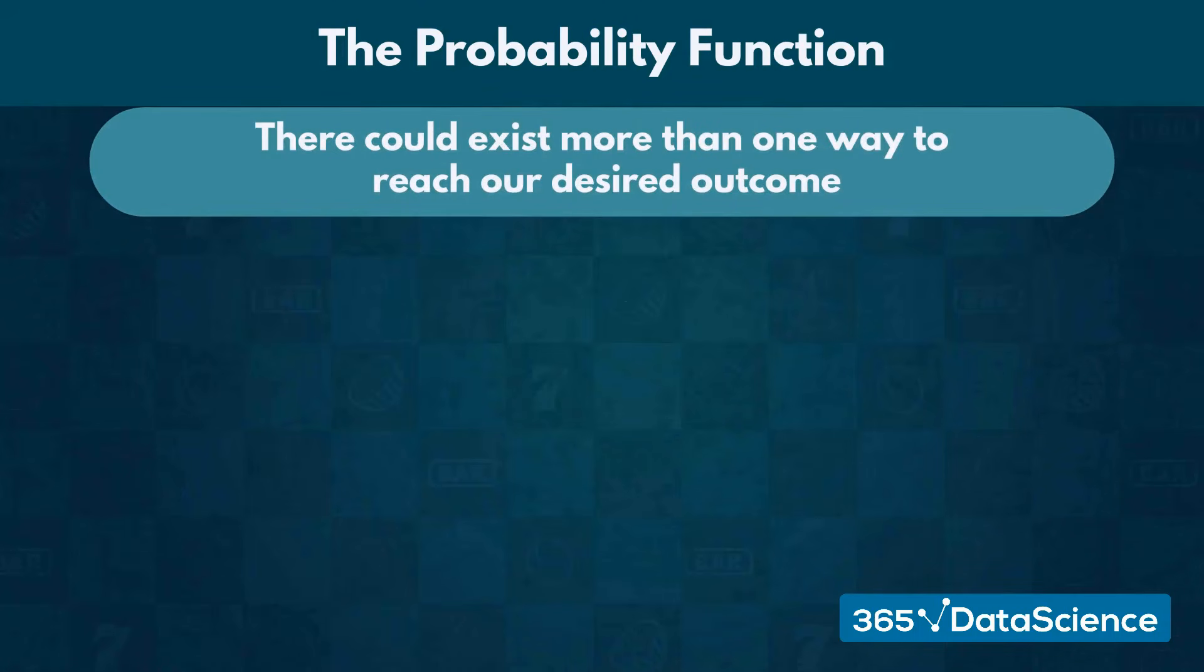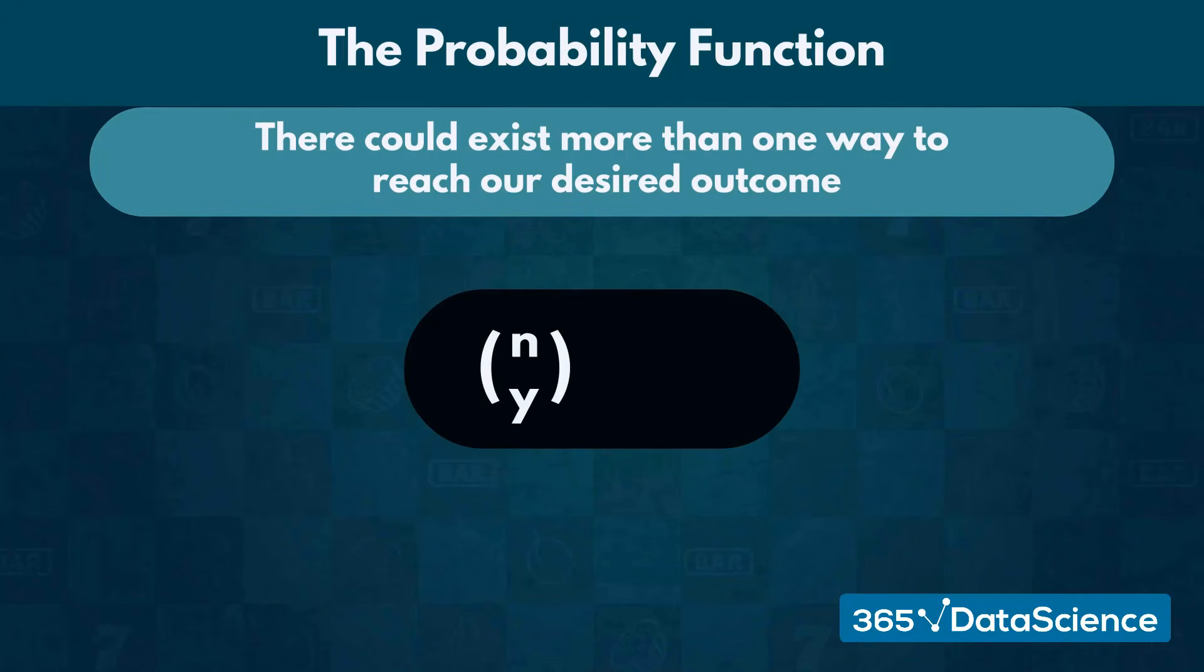Additionally, more than one way to reach our desired outcome could exist. To account for this, we need to find the number of scenarios in which Y out of the N many outcomes would be favorable. But these are actually the combinations we already know.